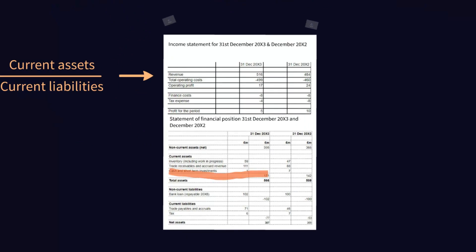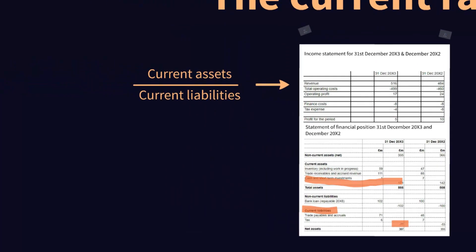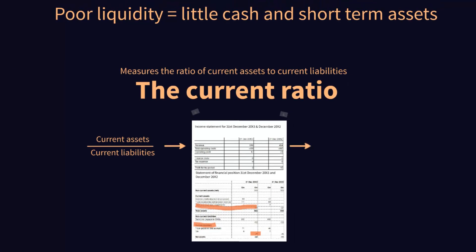We can see that the grand total of current assets comes to £171 million and the grand total of current liabilities comes to £77 million. So how many times over can we pay off our liabilities with our current assets? We take 171, divide it by 77, and we get 2.22. So we can pay off our current liabilities 2.22 times with our current assets.